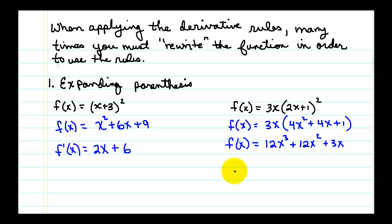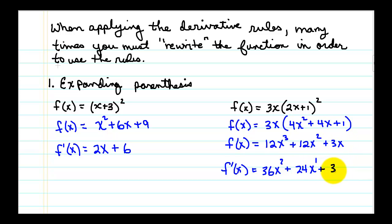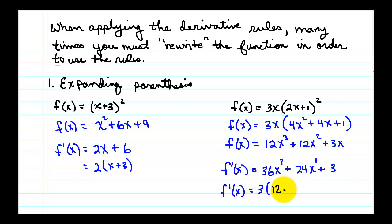Now it's a polynomial we can differentiate using our rules. Taking the derivative: 3 times 12 is 36 and subtract 1 from the exponent; 2 times 12 is 24 and subtract 1 from the exponent; and the derivative of 3x is 3. We always want to try to factor our final derivative if we can — over here we could factor out a 2, and here we can factor out a 3. So if we have parentheses in a problem, we use FOIL or the distributive property to eliminate them first. That was skill 1.